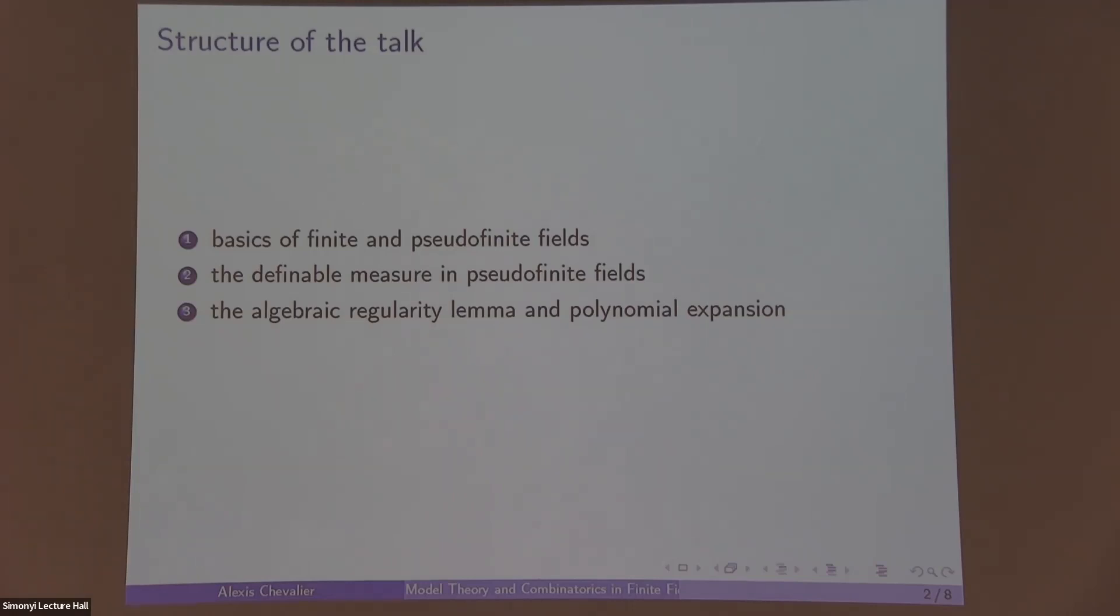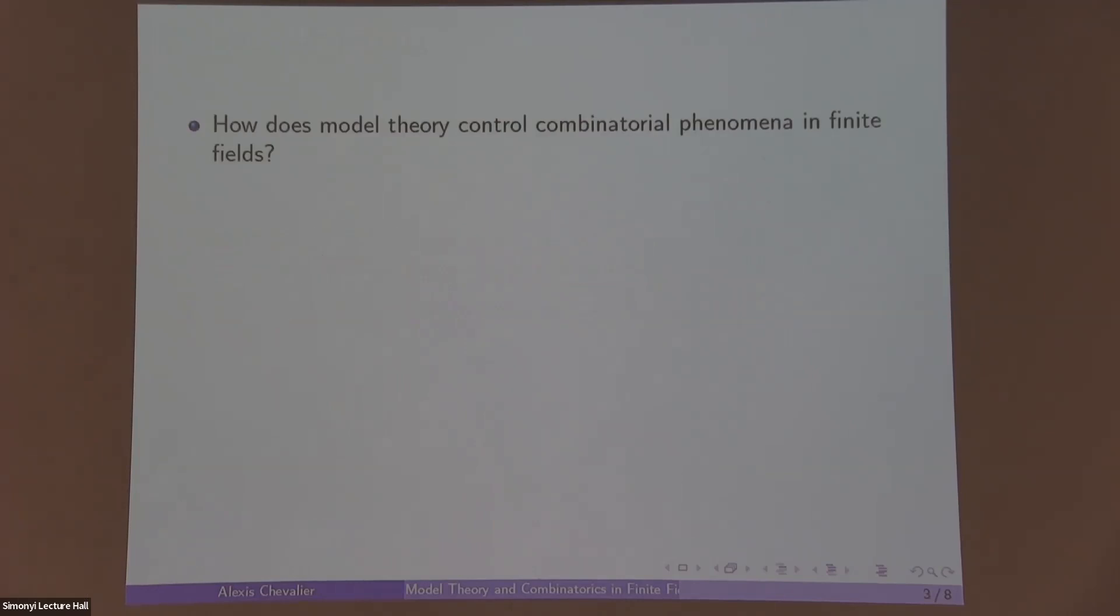So the general question is: How does model theory control combinatorial phenomena in finite fields? Maybe one particularity of model theory is that we're interested in specific formulas in finite fields. So we really choose one formula and then we work with that. We're going to study, well, we're going to give ourselves the language of first-order logic.